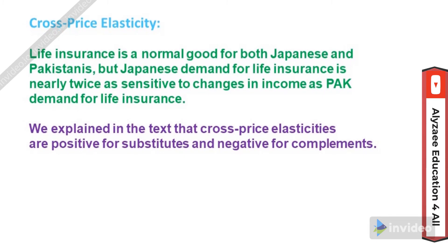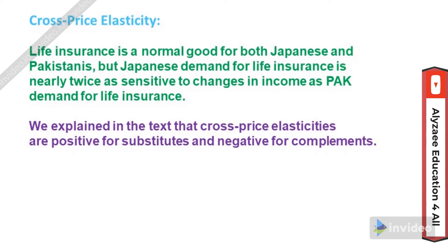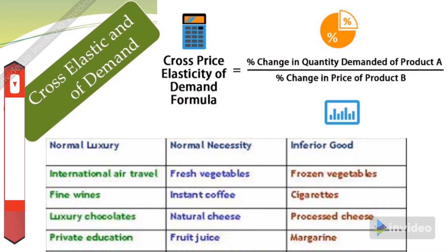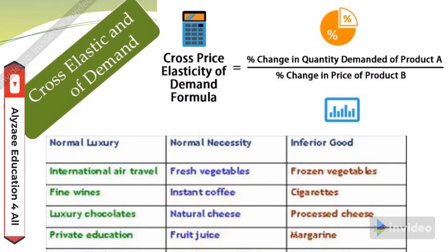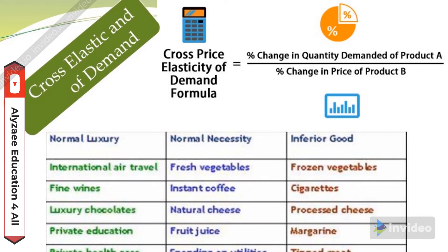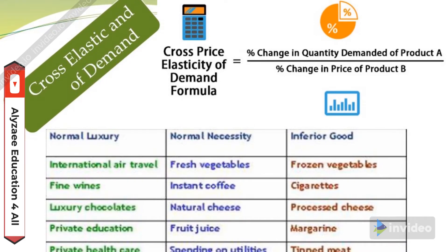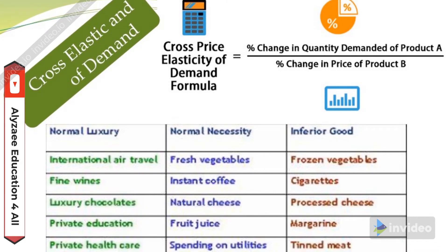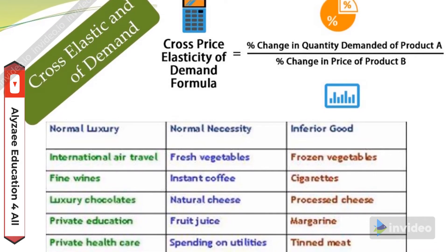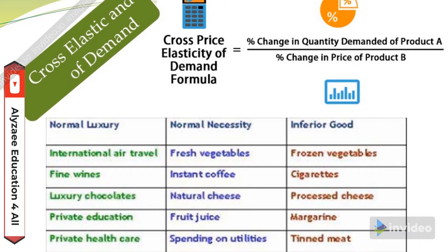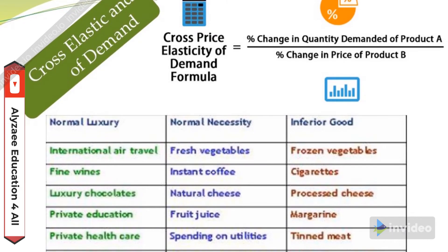In this slide we will discuss a comparison for normal goods, normal necessity goods, normal luxury goods, and inferior goods. The formula for cross price elasticity of demand is the percentage change in quantity demanded of product A divided by the percentage change in the price of product B. You need to learn this formula by heart and keep it in mind.